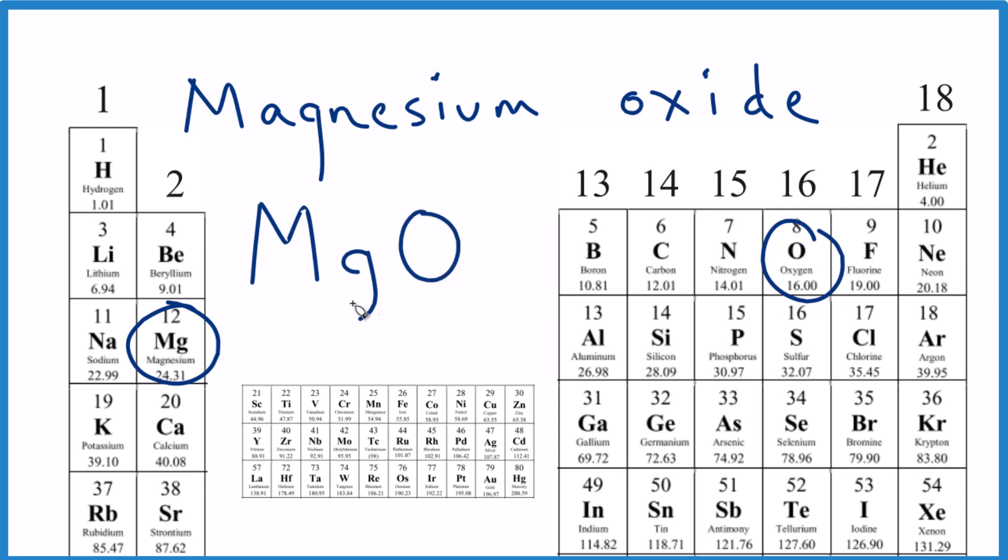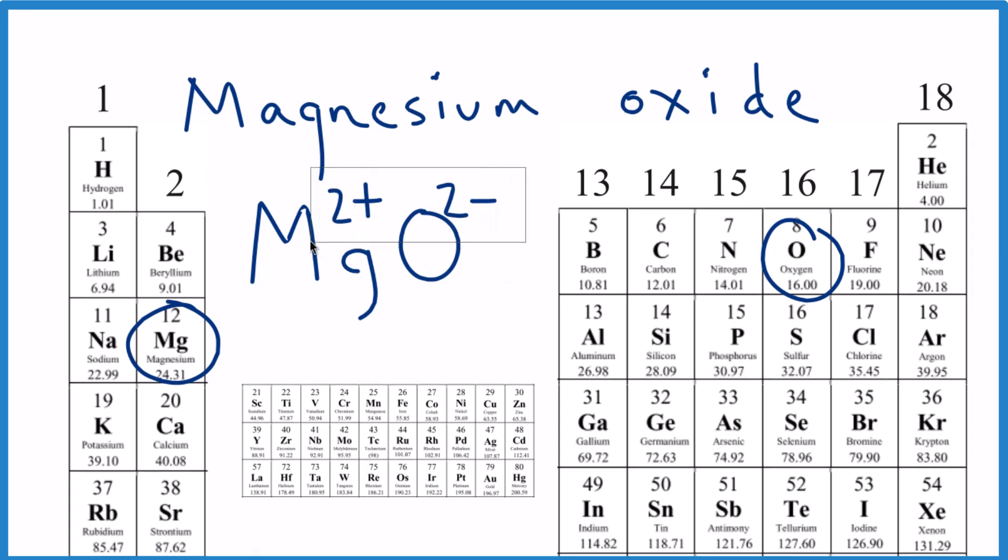Then we look at the charge. Magnesium's in group two, so two plus. Oxygen is zero, one minus, two minus. So oxygen is two minus, and they balance out. We don't need to do anything—that's the formula for magnesium oxide.